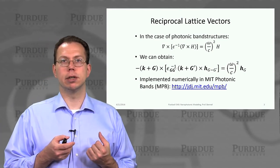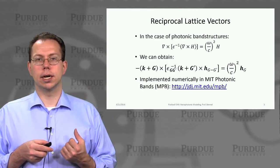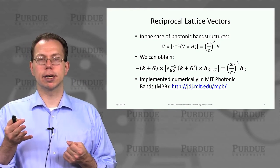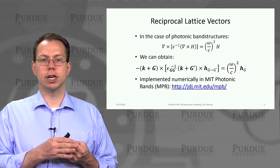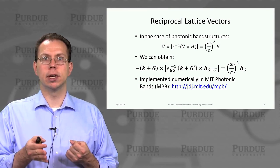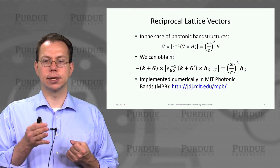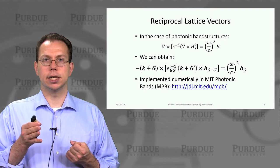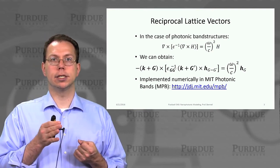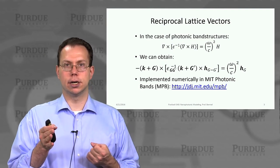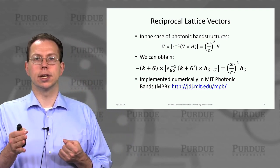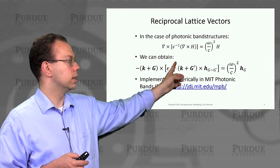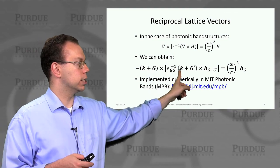When we rewrite H as a Bloch solution, which is essentially a periodic function times the plane wave, and write that periodic function as sum over G of H_G times e to the iG dot R, we get sum over G H_G e to the i(K plus G) dot R for our solutions. If we apply the curl and epsilon inverse operators in the Fourier domain, that gives us an equation that looks like this.